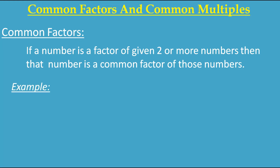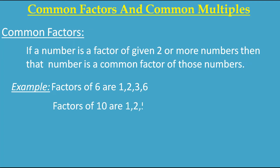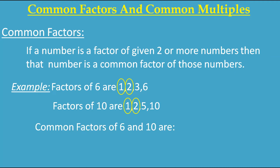The factors of 6 are 1, 2, 3, and 6. The factors of 10 are 1, 2, 5, and 10. Now if you look carefully at the factors, you will understand that 1 and 2 — these two factors are the same for both of them. So these numbers are called common factors. The common factors of 6 and 10 are 1 and 2.